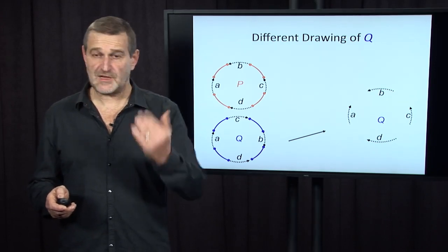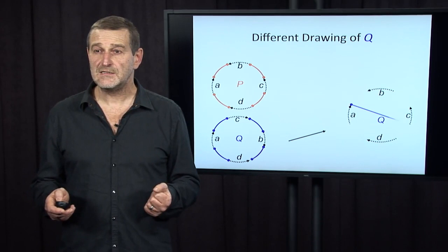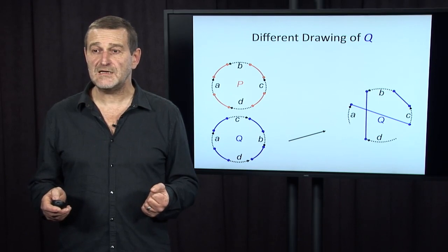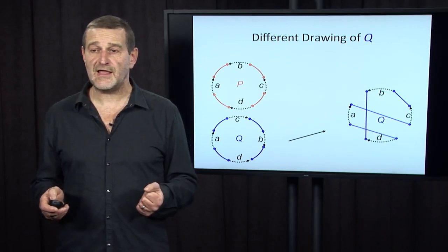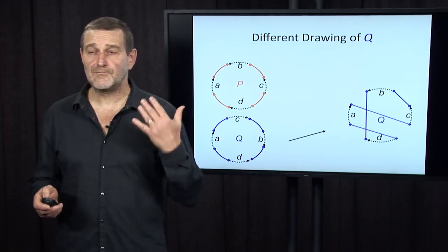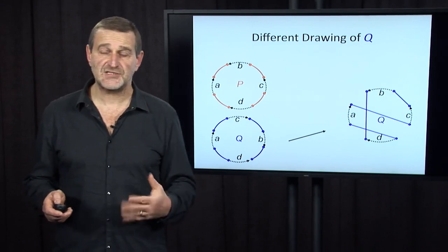After we look at genome A, after A we should go to C, that's what we do. After C, we should go to B. After B, we should go to minus D, and after minus D we should go to A. So that's a new representation of Q, where black edges are arranged exactly in the same way as they are arranged in P.